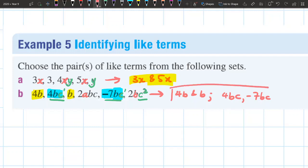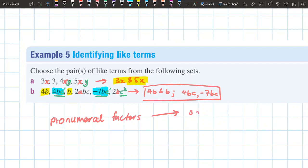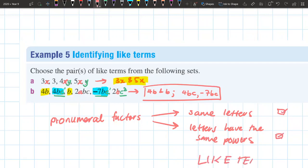So these are my only like term pairs in my set here. So that's how we identify like terms. We need to check our pronumeral factors. So we want to check if we have the same letters, same letters. And we also want to check that our letters have the same powers. If it satisfies those two criteria, so if you tick both of those boxes, then we have like terms. That's this first section on identifying like terms.